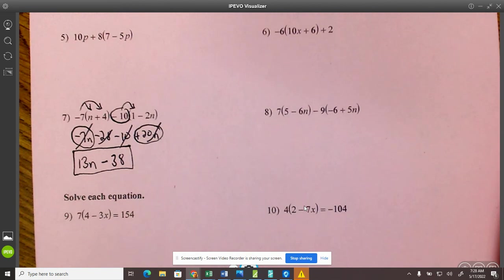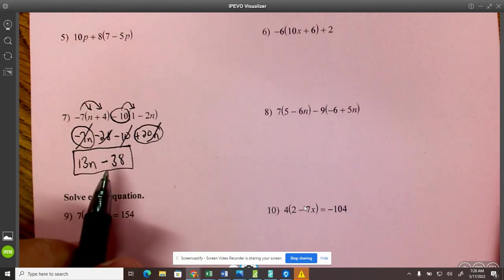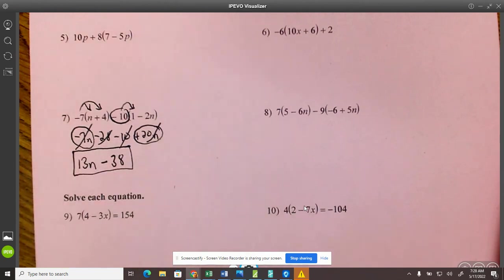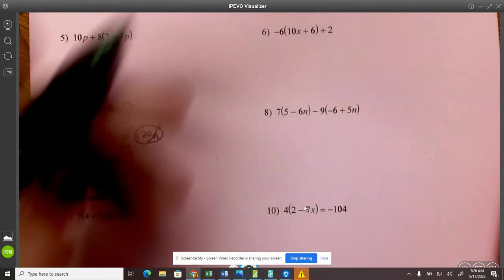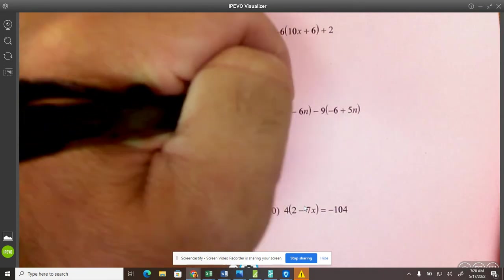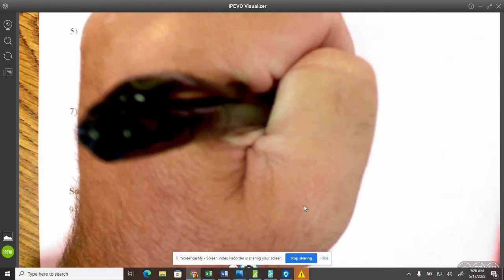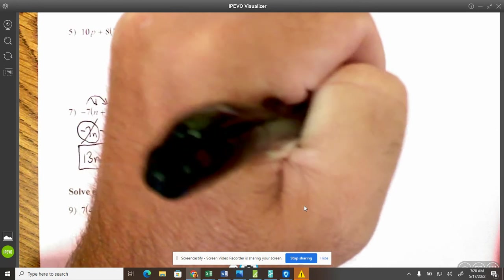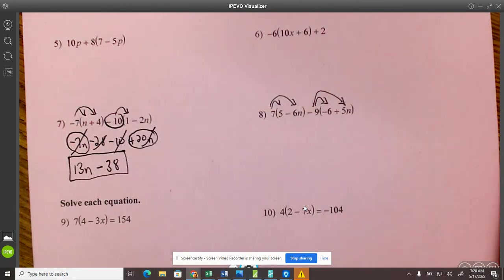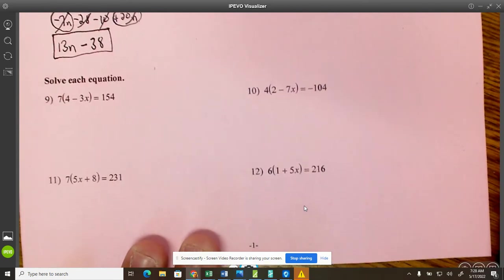So a lot of it has to do with multiplying and then being able to combine, add or subtract. Be sure that you're multiplying everything on the outside of that parentheses, everything on the inside. All right. So let's look at some of these equations.